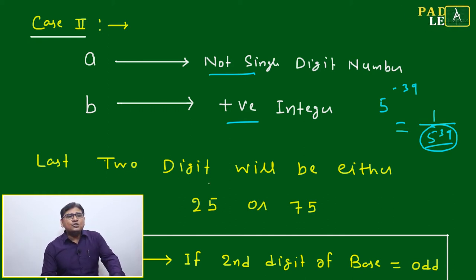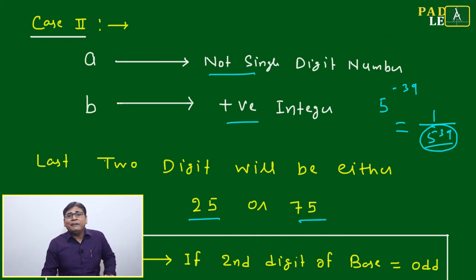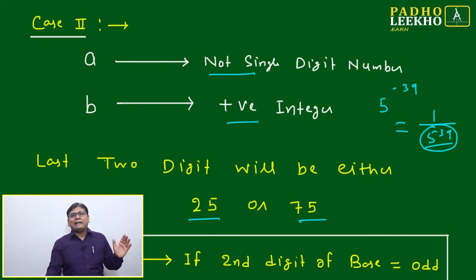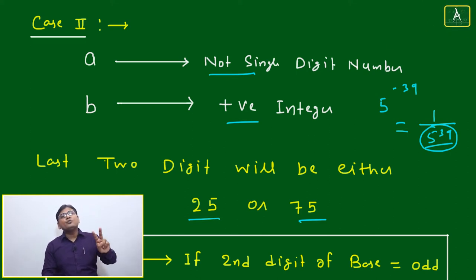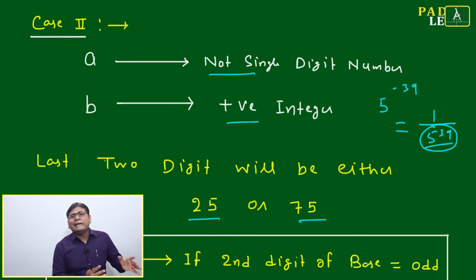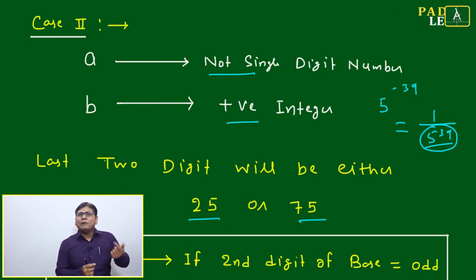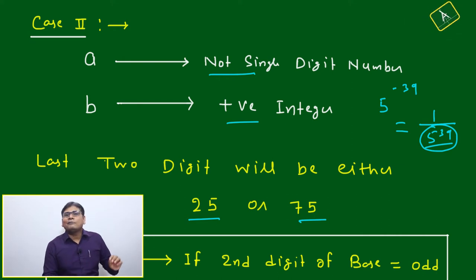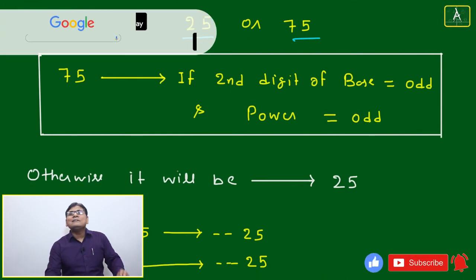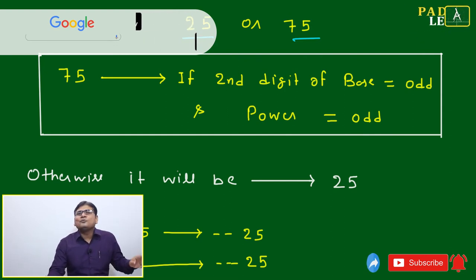The last two digits will be either 25 or 75 — that is a big relief. Whether it is a single digit, two digit, or any number of digits, if the number ends with five, the last two digits have only two possibilities: 25 and 75. I am following the elimination method — I find which cases give 75, and the remaining cases give 25.